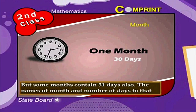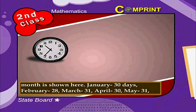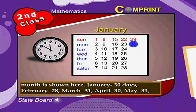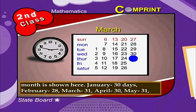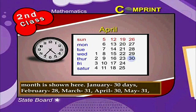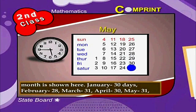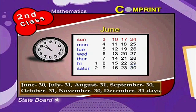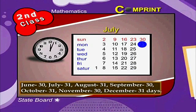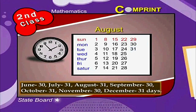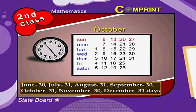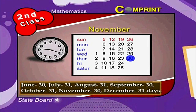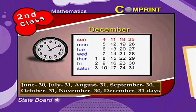The names of the months and the number of days in each month are: January 31 days, February 28 days, March 31, April 30, May 31, June 30, July 31, August 31, September 30, October 31, November 30, and December 31 days.